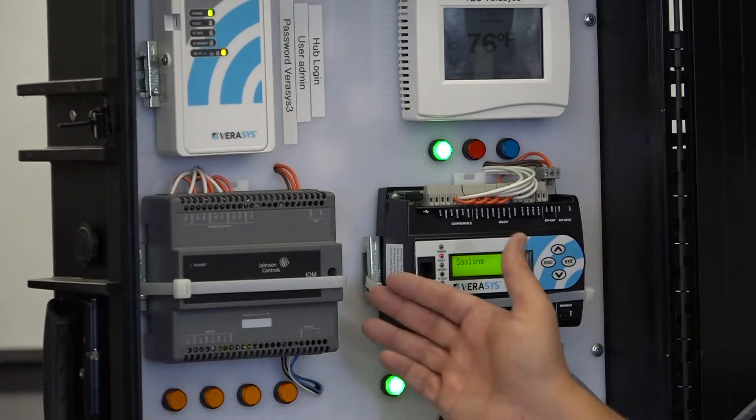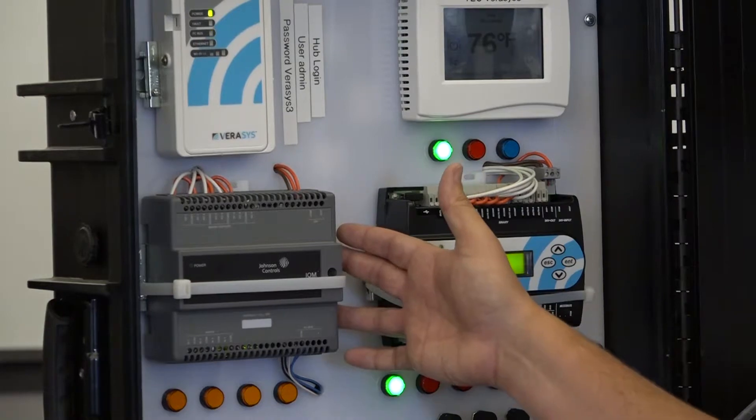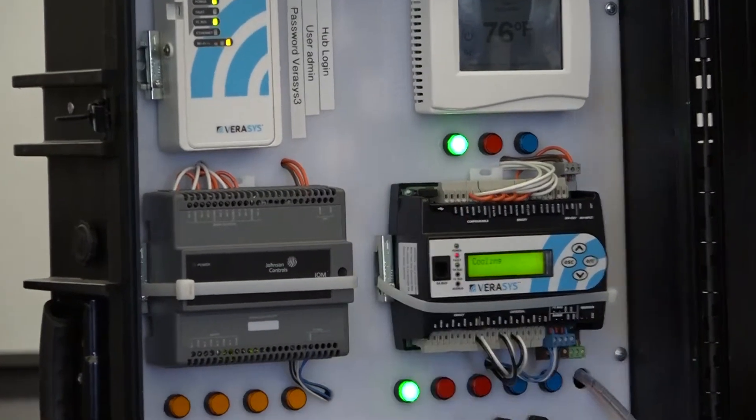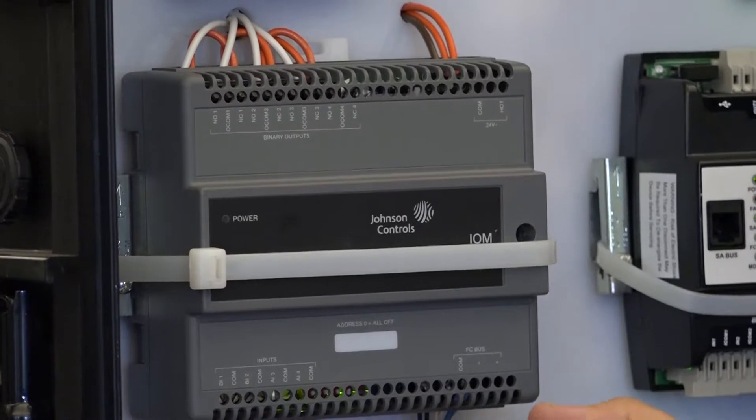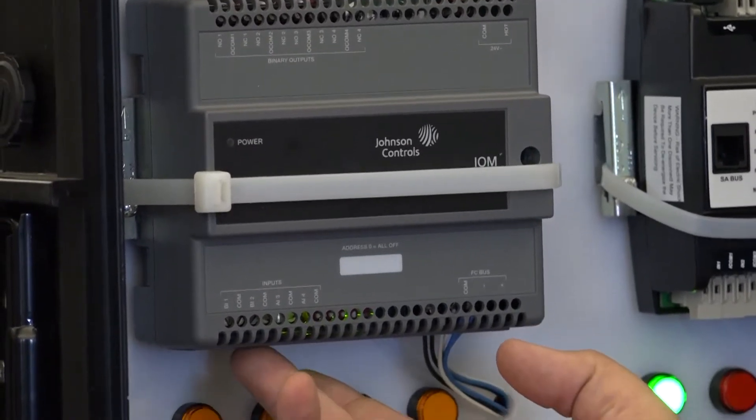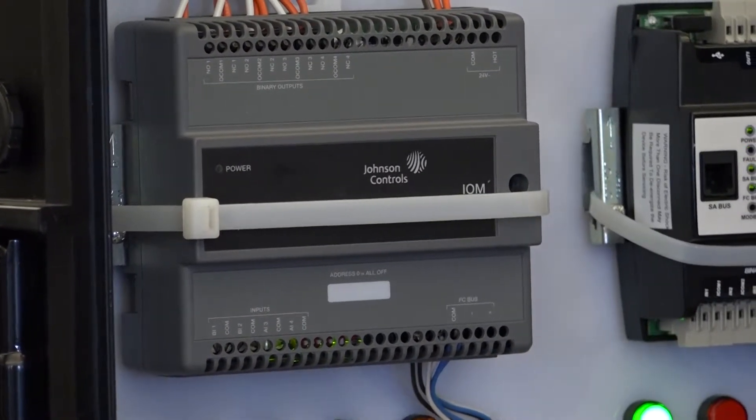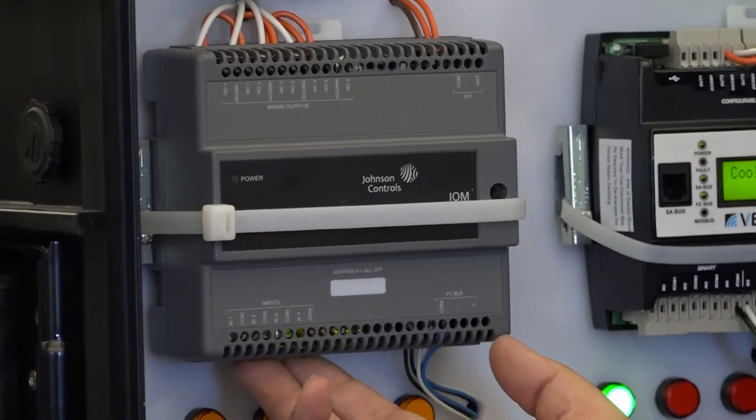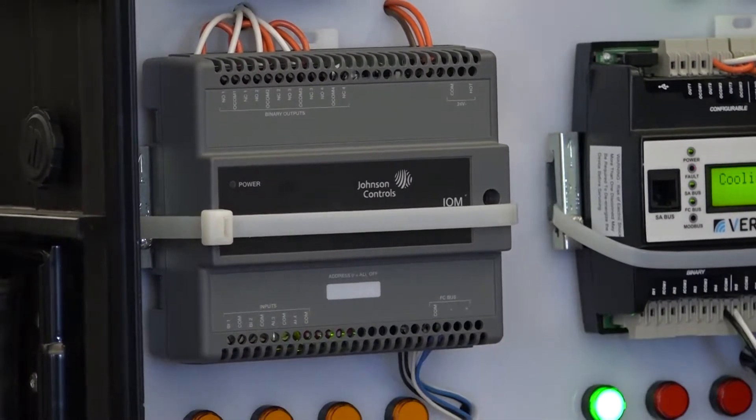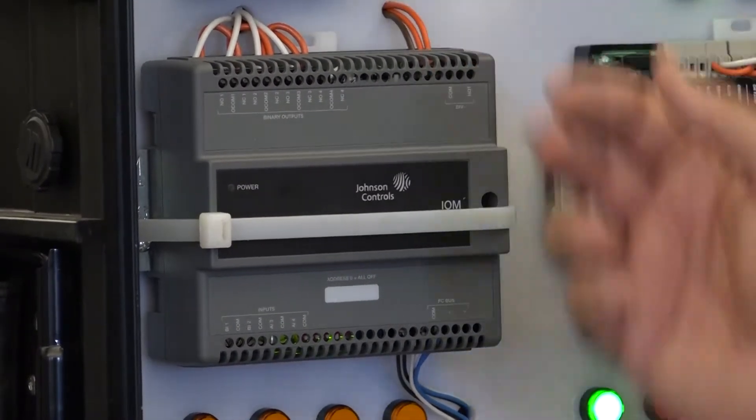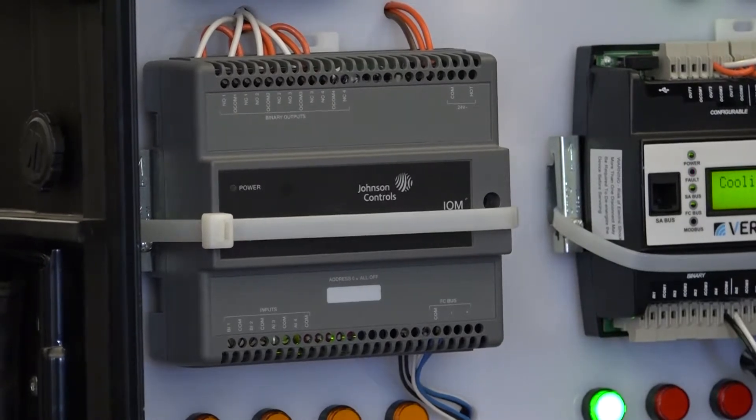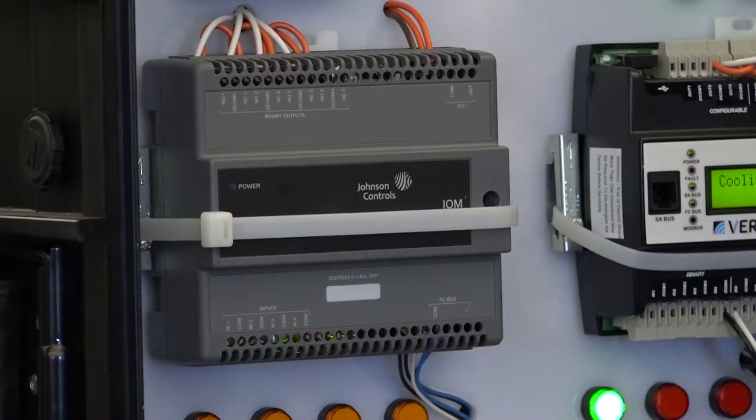The IOM100 is mainly used for simple systems. For example, we could take an outside air temperature sensor and either bring it off a controller or hardwire that sensor into the IOM and use it with an interlock to control or enable a boiler.